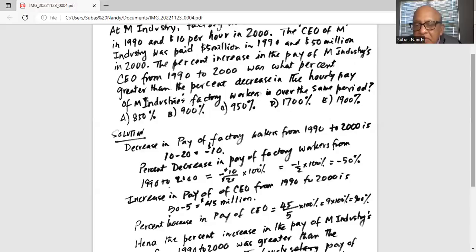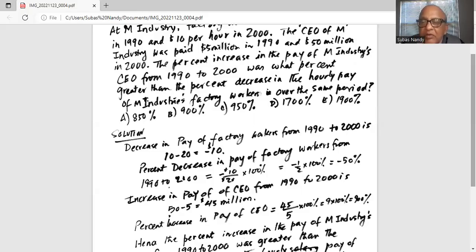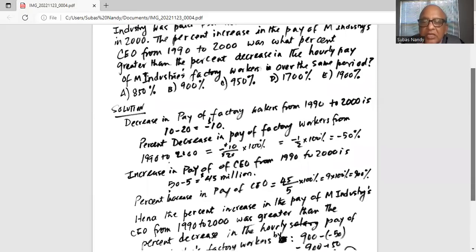45 divided by 5 times 100%. Now, 5 goes into 45 nine times. So 9 times 100 is 900%, is the percent increase in pay of CEO from 1990 to 2000.